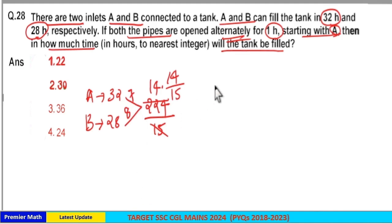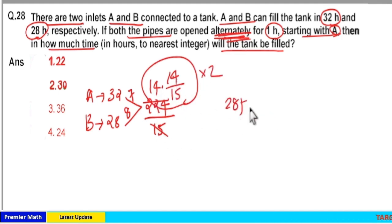Now question clearly says A and B opened alternately for 1 hour. Now together A and B take 14 and 14 by 15 time to fill this 224 units. Then alternatively they take double of this time, which is equal to 14 into 2, 28, plus 14 by 15 into 2, which is less than 30 hours, which is equal to option 2.